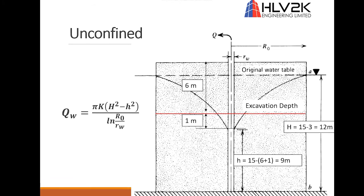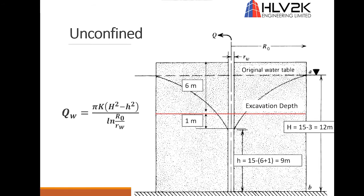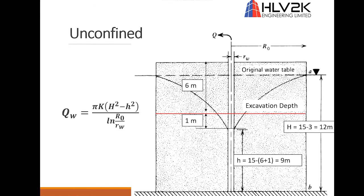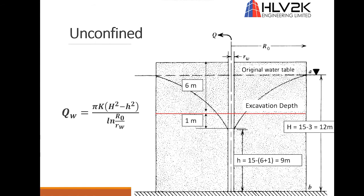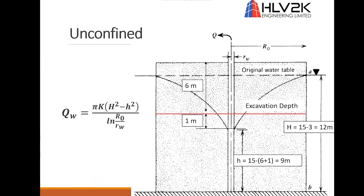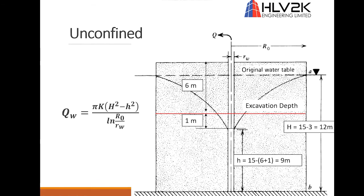From the assumptions in the question, we know that it's an unconfined aquifer. The original water table elevation is 12 meters above bedrock or impervious layer. The final elevation would be 9 meters because we want the water table to be 1 meter below the excavated depth.